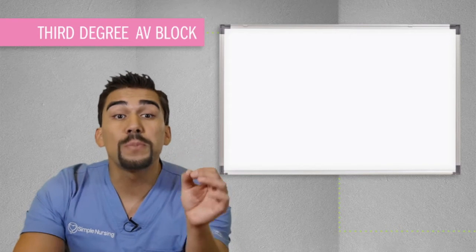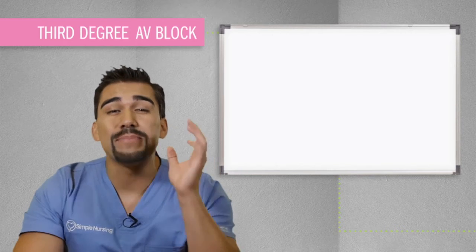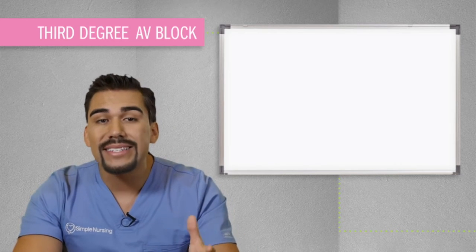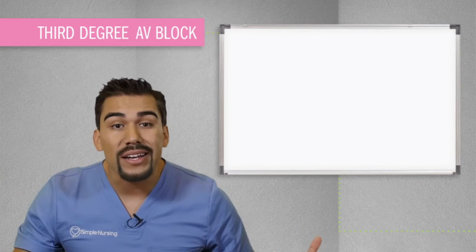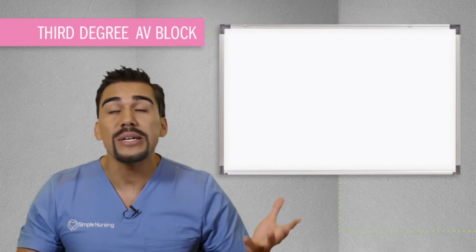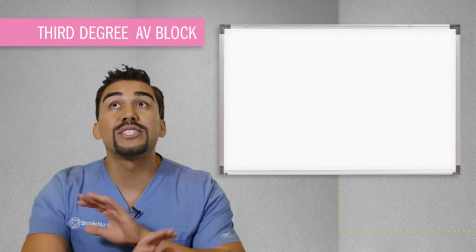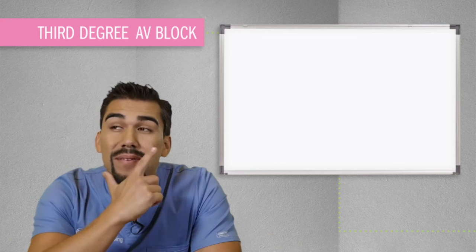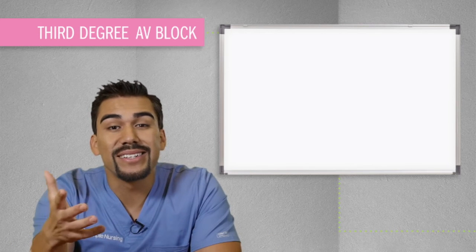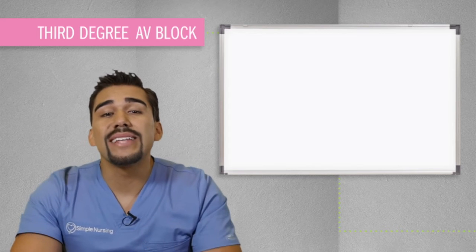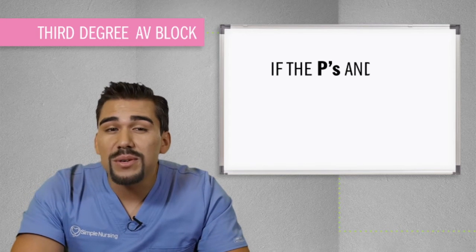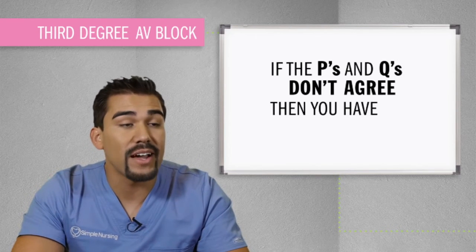The huge point here is that the SA node is making P waves, but the P's and Q's don't agree — they're basically not talking anymore. They're pretty much like seeing other people. It's over between them. The moral of the story is that if the P's and Q's don't agree, then you've got that third degree.